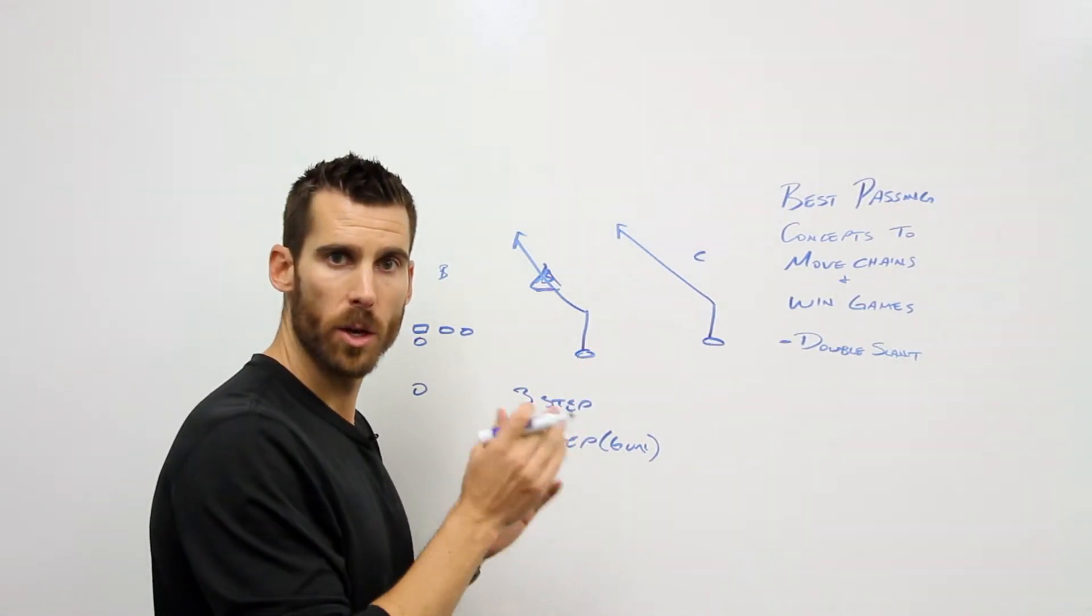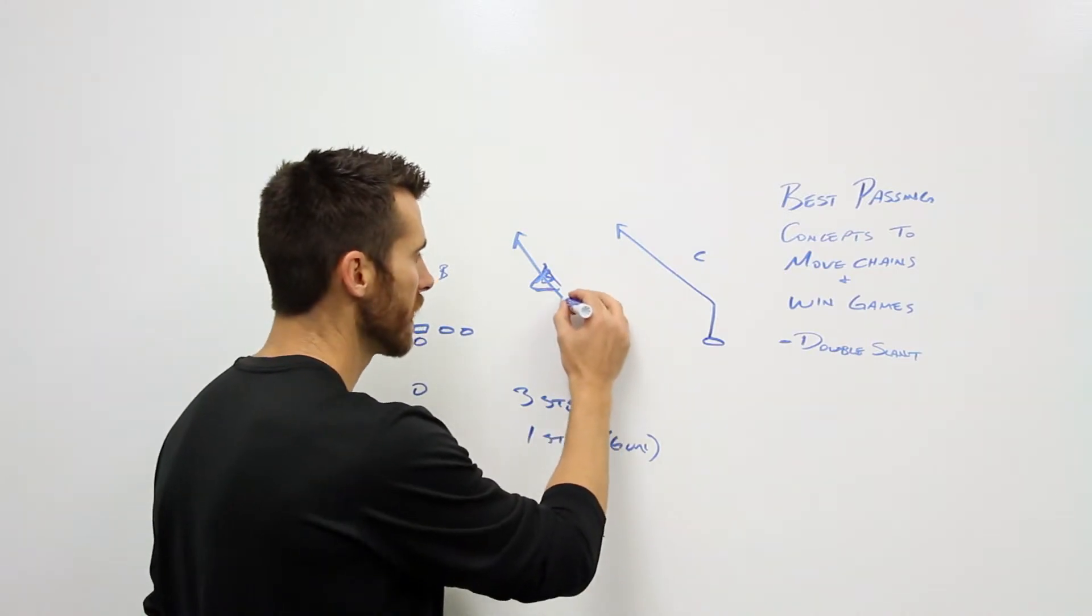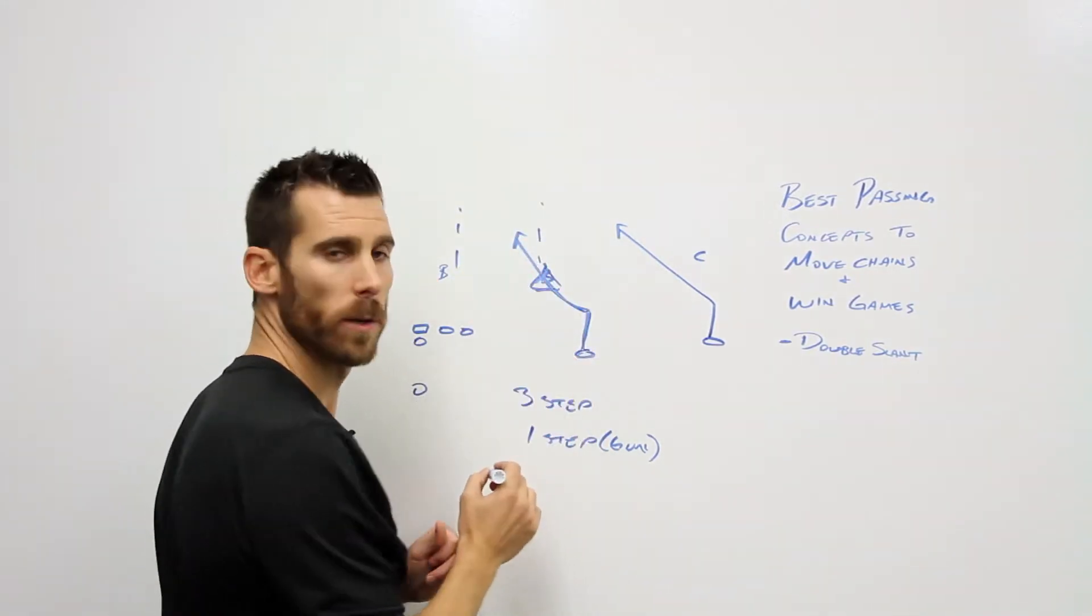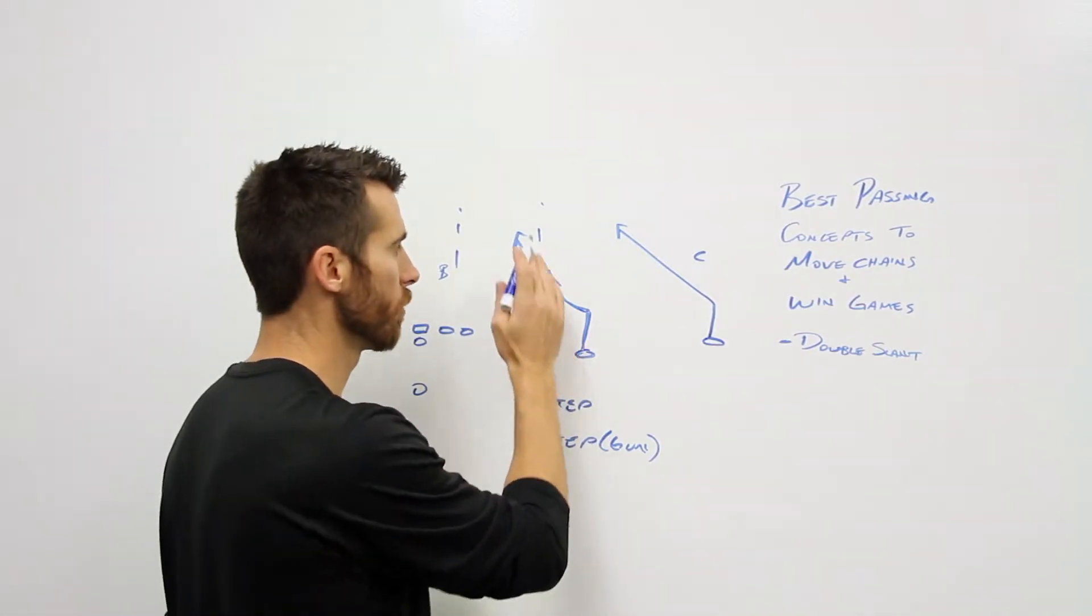If we win the inside, throw the route. So if we get inside at all, you see we've got this lane here we want to work in that we want to throw the football. So if we get inside leverage we're going to throw that.